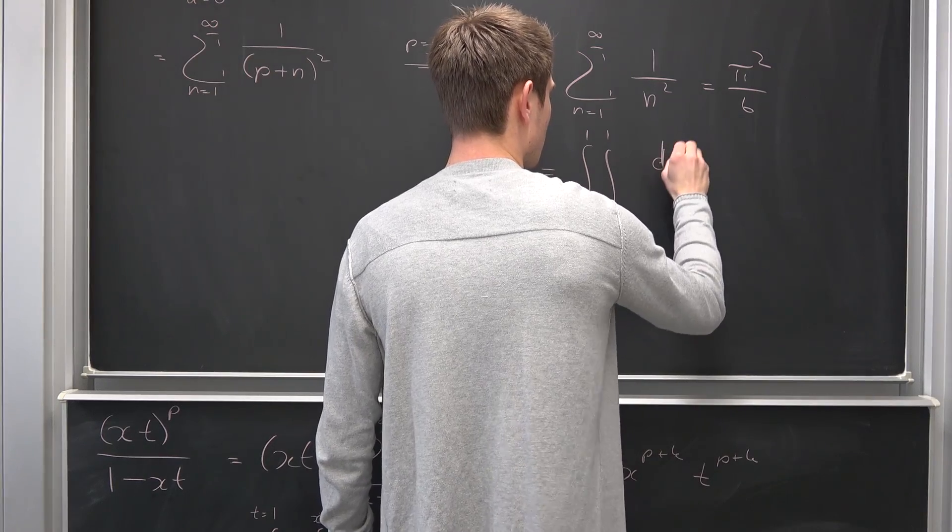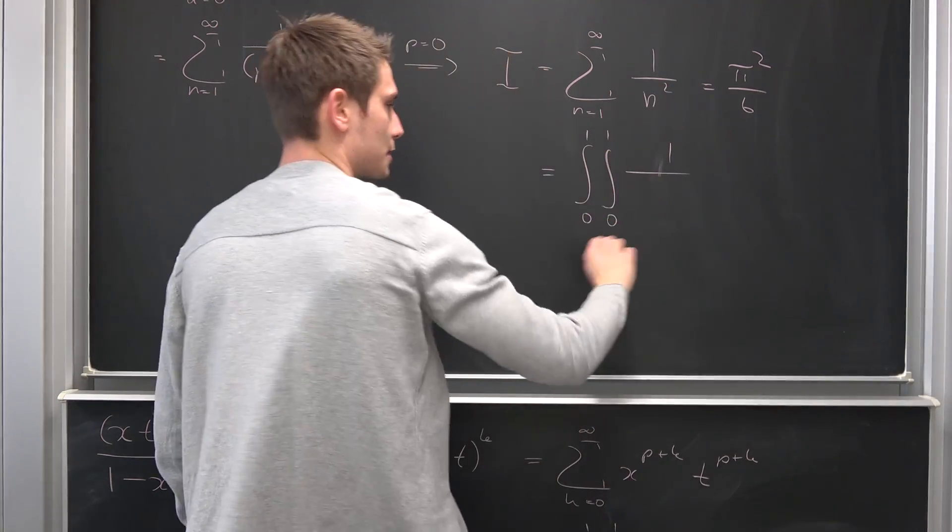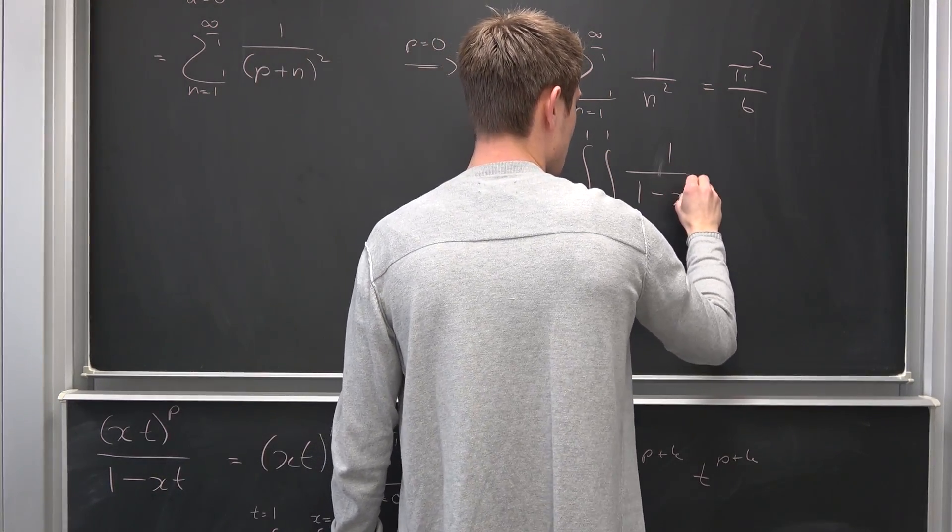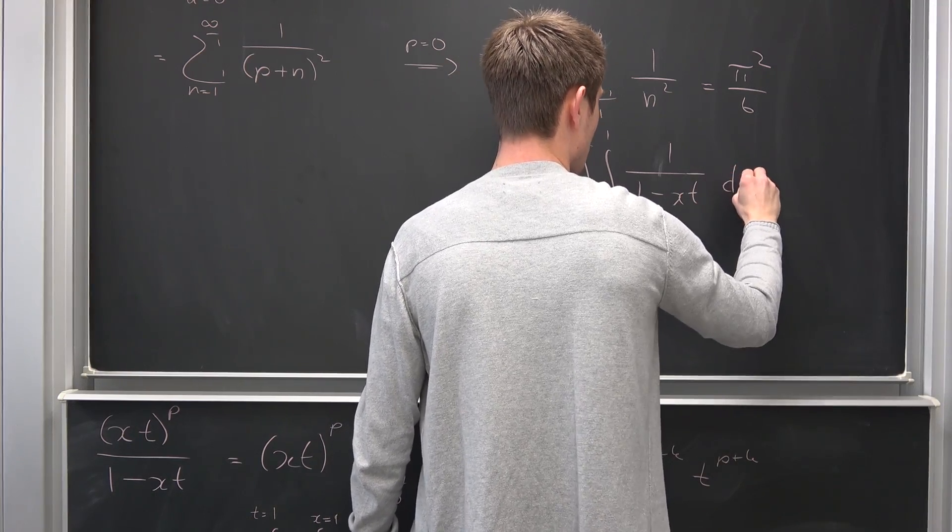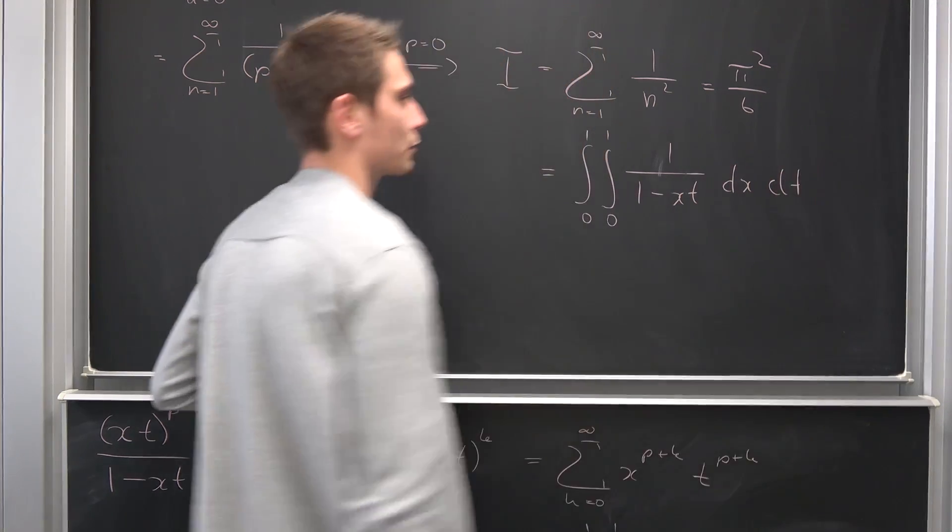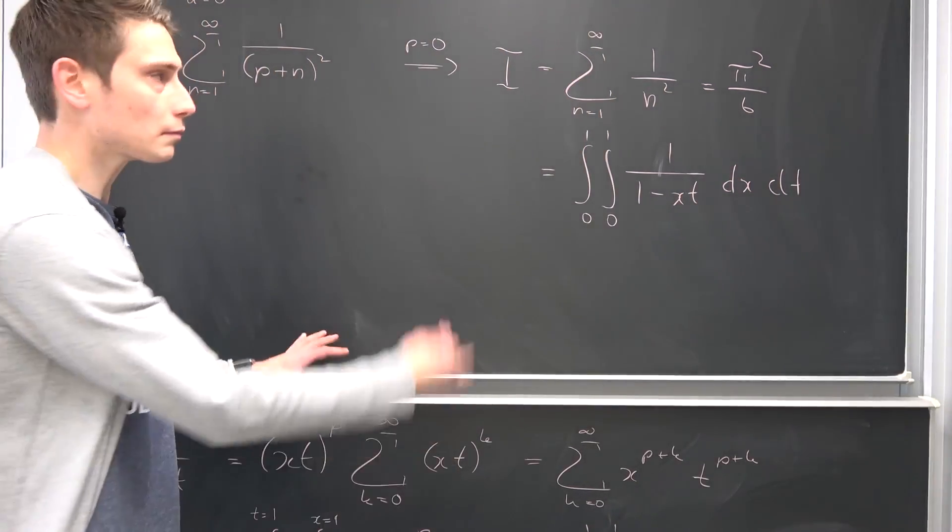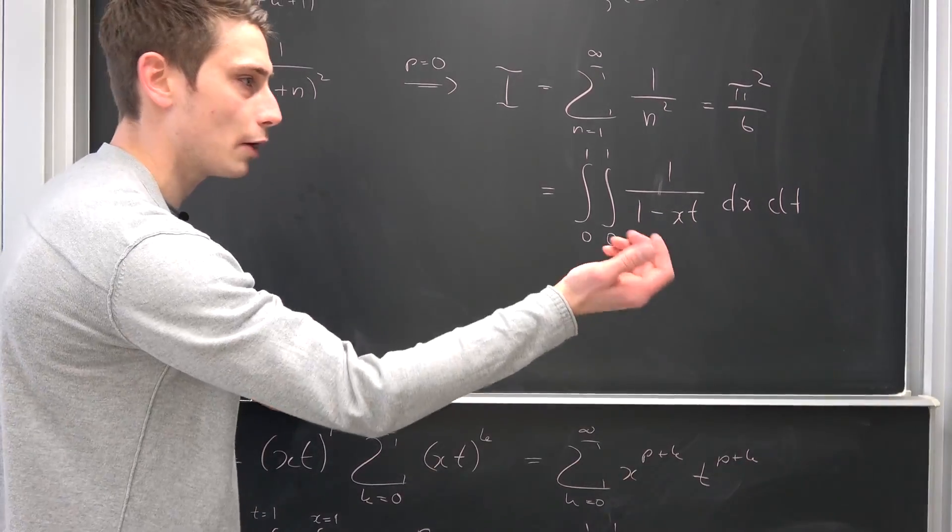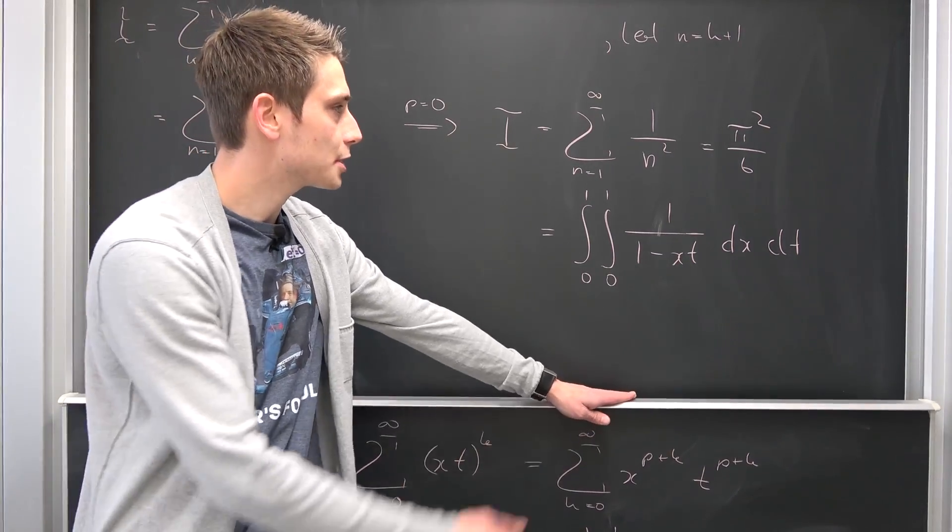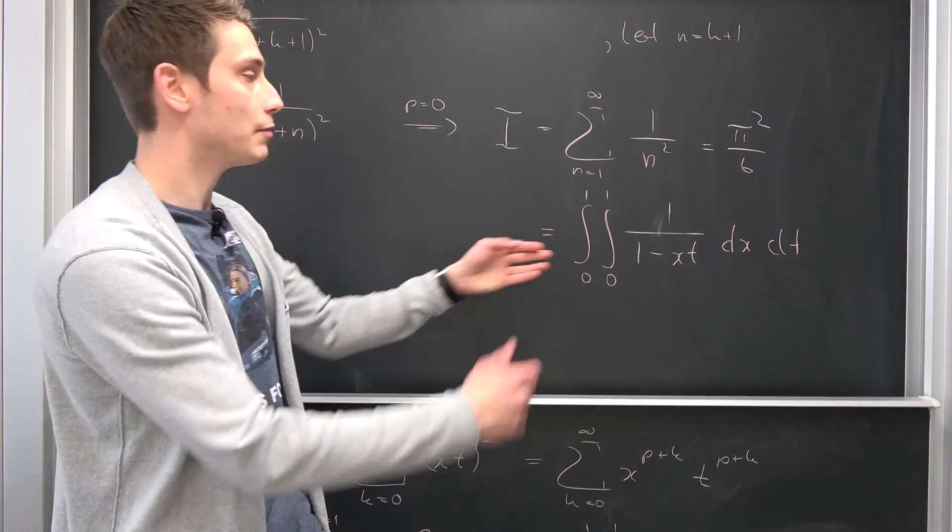Let's say, I'm going to put the differentials to the side there. 1 over 1 minus x times t, integrated with respect to x, integrated with respect to t. And this is it. This is actually our integral representation of the Basel problem. Yet another one. There are probably many many more of those.